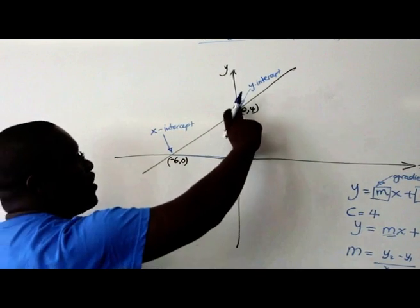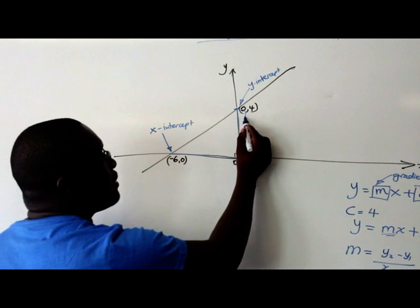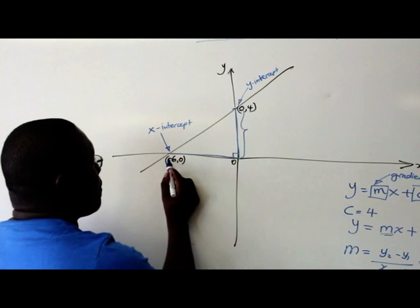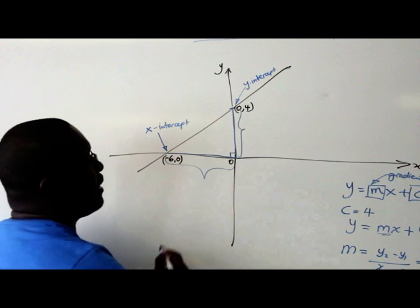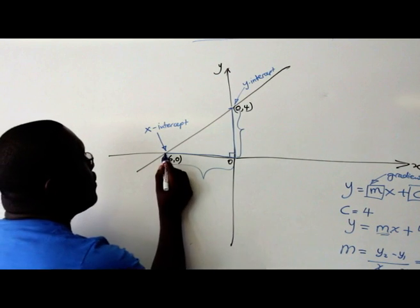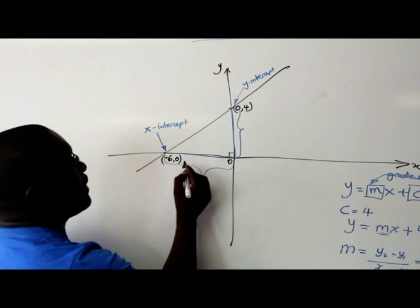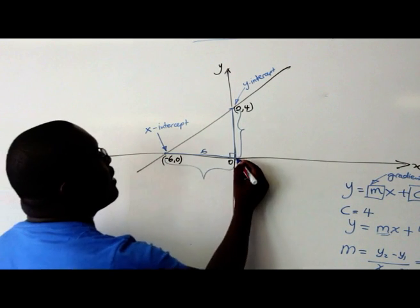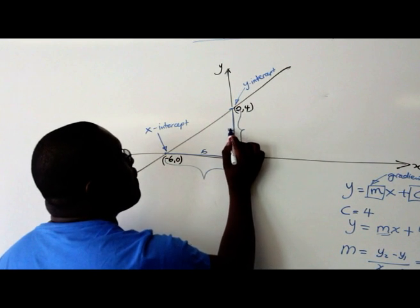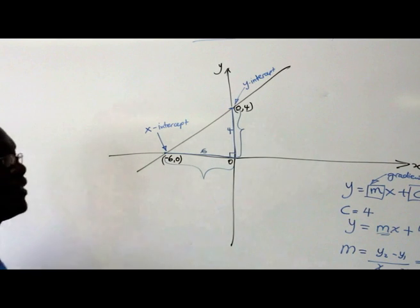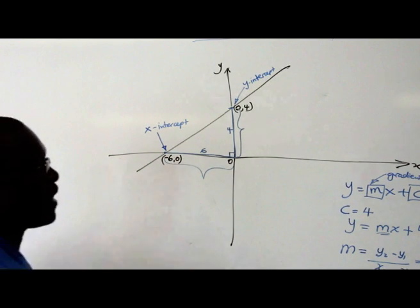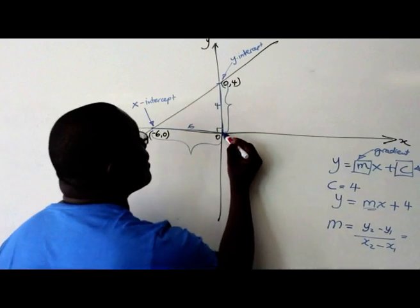We're going to compare the change in y. This is the change in y and this is the change in x. So the distance from here to there, if you look at it, it's 6 units. The distance from here to there is 4 units. So change in y would be from 0 to 4.